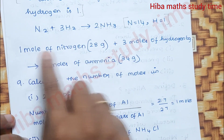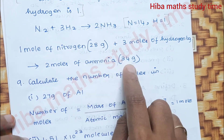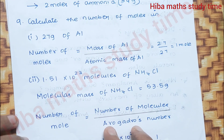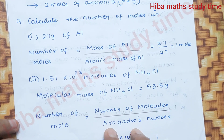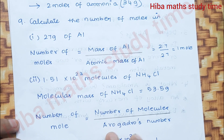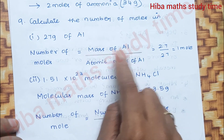Ninth question: Calculate the number of moles in 27 grams of aluminum. The atomic mass of aluminum is 27. Number of moles = mass / atomic mass = 27 / 27 = 1 mole.